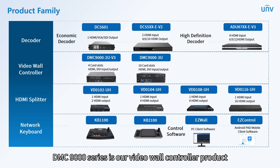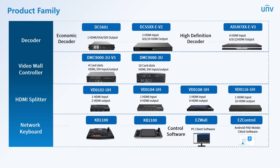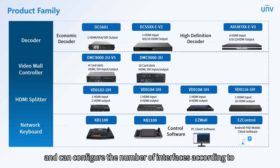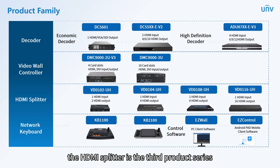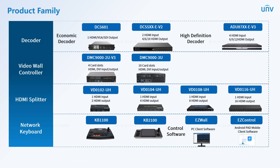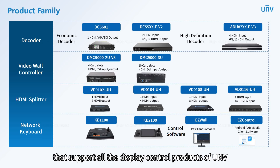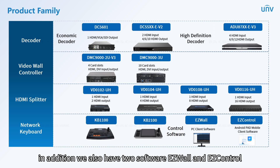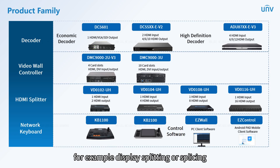The DMC-9000 series is our video wall controller product, with the main function of achieving display splicing on the video wall. There are two products with plug-in design that can configure the number of interfaces according to different demands. The HDMI splitter is the third product series, mainly achieving signal copy output, with four products. The fourth series is the network keyboard, which can complete video wall operations without relying on a software client, with two products supporting all UNV display control products. We also have two software tools, EasyWall and EasyControl, used with decoders and controllers for display splitting or splicing.